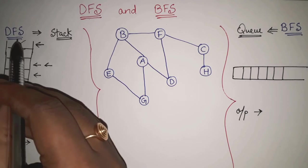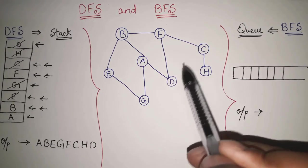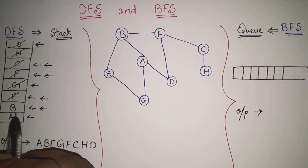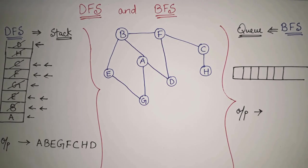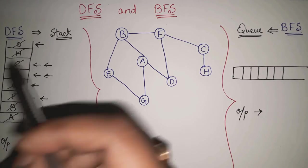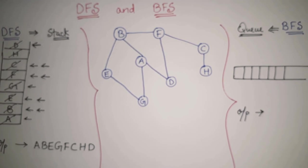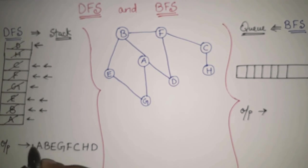Now the top of the stack is D. From D, directly connected are A and F — both already there, so I pop D. Now the top of the stack is F. From F, B, C, D are all already there, so F is popped up. Then B is at the top — from B, directly connected are A, E, F, all already there, so B is popped up. Then only A remains — from A, B, G, D are all already there, so A is also popped up. When all elements from the stack are popped up — when my stack is empty — I can say that my DFS traversal is over. This is my DFS traversal output.